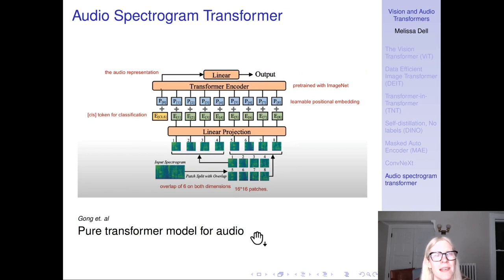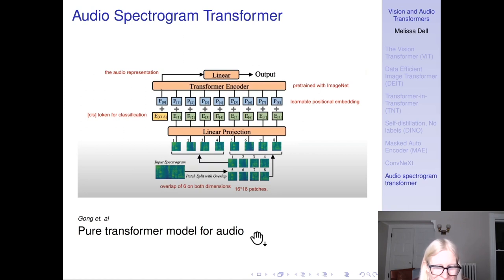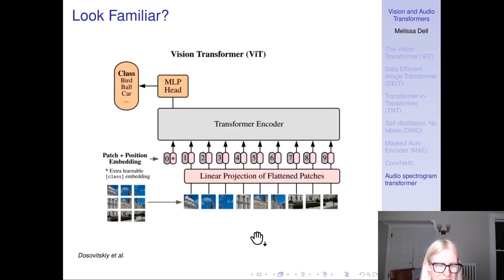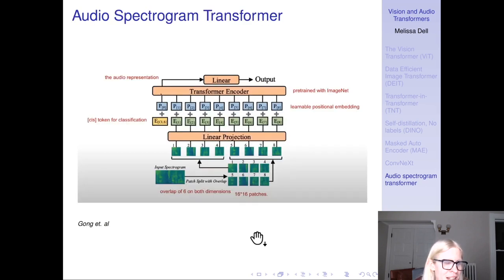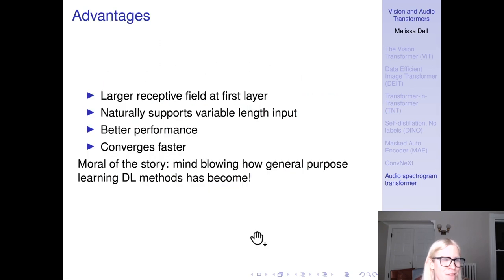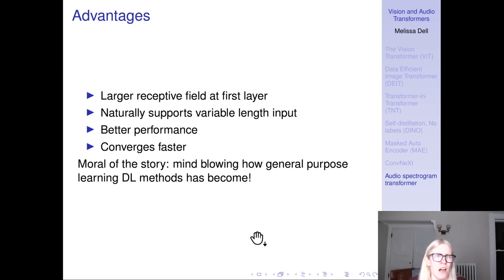The challenge is there's no dataset like ImageNet for audio to pre-train on. So they take a pre-trained ImageNet ViT and keep tuning it on the audio data available — a VIT pre-trained on ImageNet, then trained further on the audio spectrogram data. Advantages: the ViT gives a larger receptive field at the first layer versus a ConvNet; it naturally supports variable-length inputs which ConvNets don't — really important for audio. It achieves state-of-the-art performance, outperforming hybrid models, and converges faster.